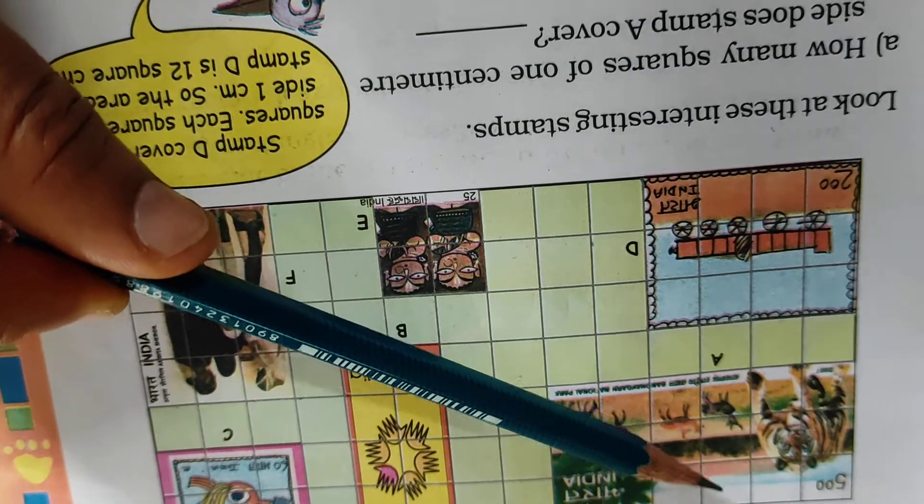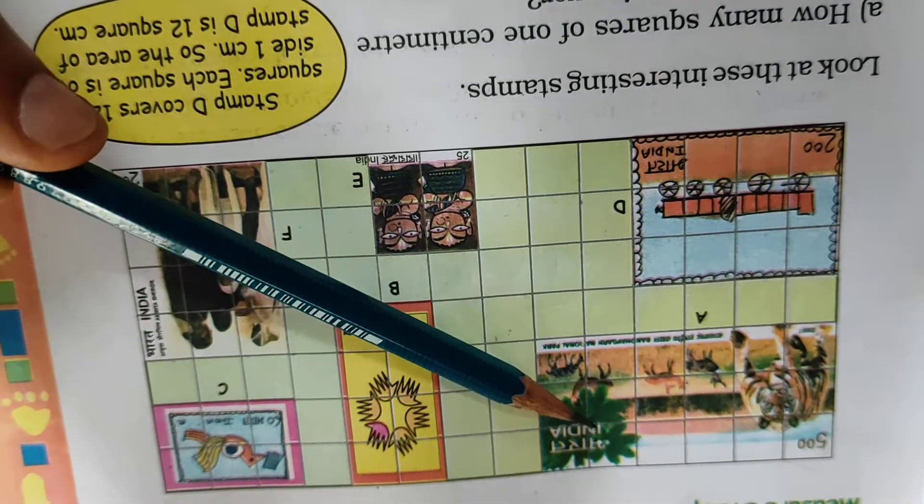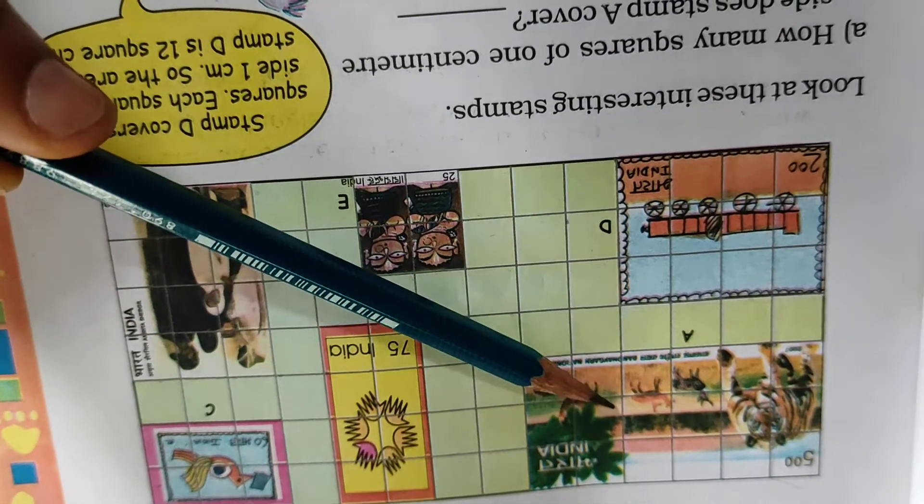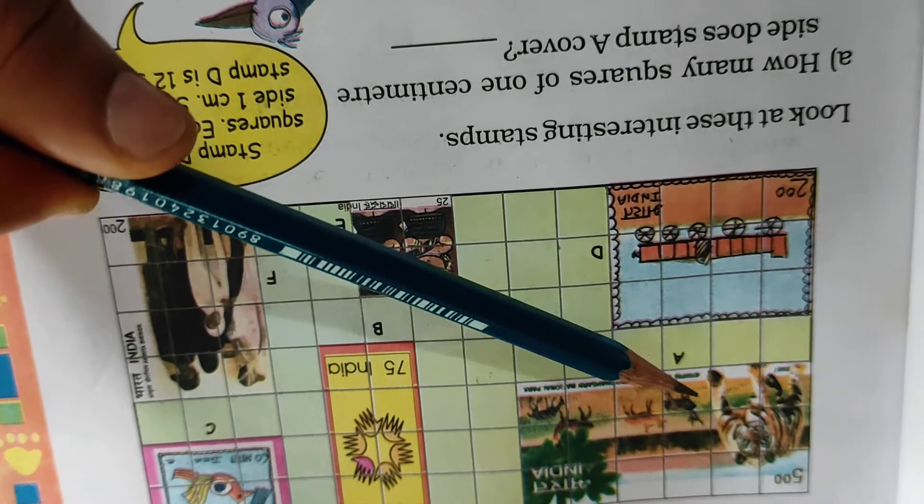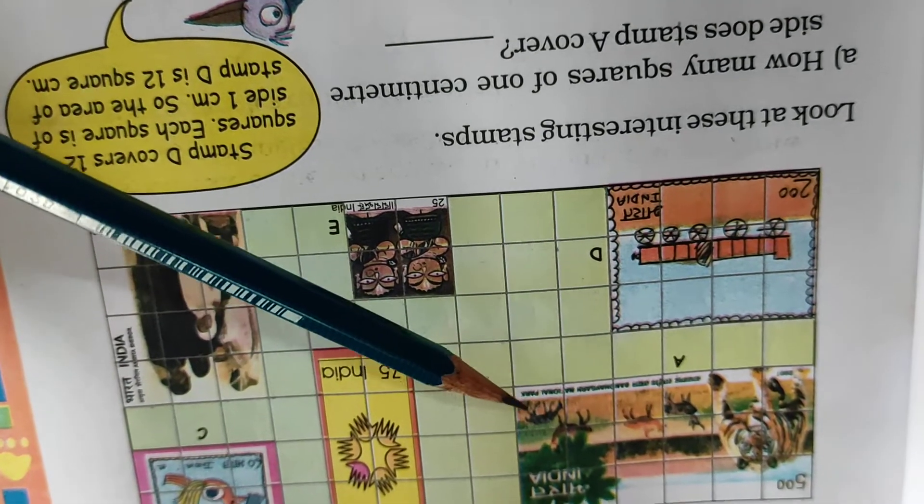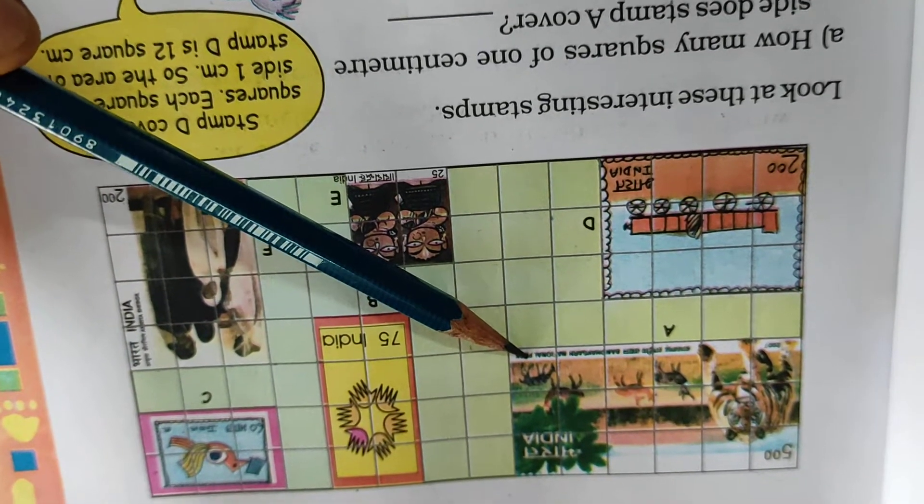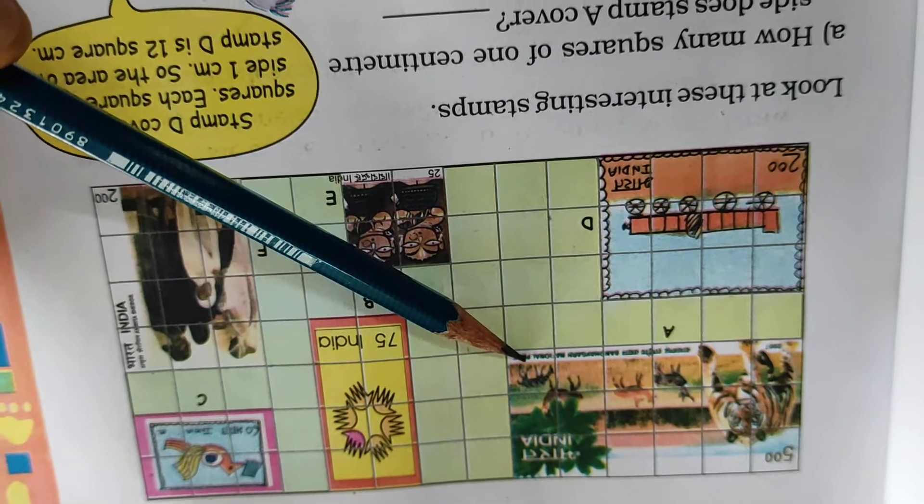1, 2, 3, 4, 5, 6, 7, 8, 9, 10, 11, 12, 13, 14, 15, 16, 17, 18. 18 squares covered.